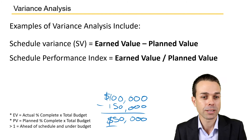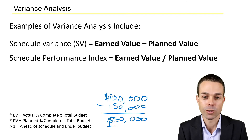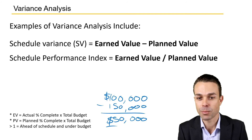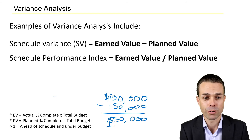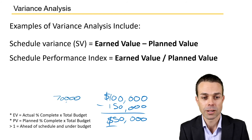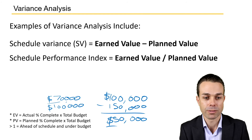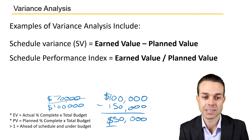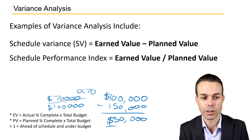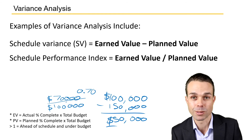Likewise, the schedule performance index would be the earned value divided by the planned value. Let's give ourselves another example: if we've earned $70,000 worth of value but we had actually planned $100,000 — a nice easy one — then divided by that, we're looking at 70%, or 0.7, for the schedule performance index.